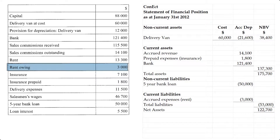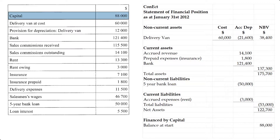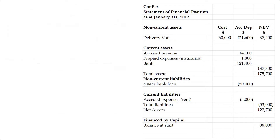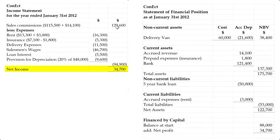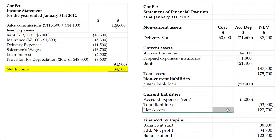We're not done because net assets must be financed by capital. According to the list of balances, the capital figure was 88,000. To that we have to add net profit. Pulling up the income statement, our net profit was 34,700. There were no drawings given to us, so we simply add the opening capital of 88,000 to the net profit of 34,700 to get 122,700. And as we can see, that's where the balance sheet balances.